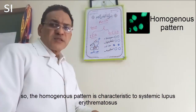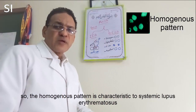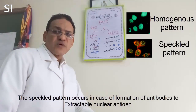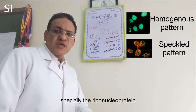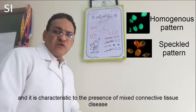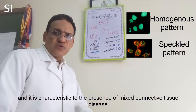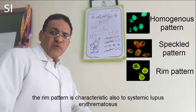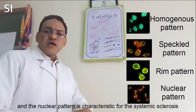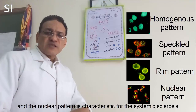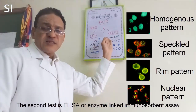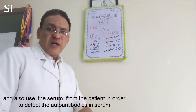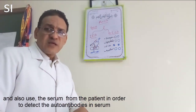The homogenous pattern is characteristic of systemic lupus erythematosus. The speckled pattern occurs in cases of antibody formation against extractable nuclear antigens, especially ribonucleoprotein, and is characteristic for mixed connective tissue disease. The rim pattern is also characteristic for systemic lupus erythematosus, and the nuclear pattern is characteristic for systemic sclerosis. The second detection method is ELISA, or enzyme-linked immunosorbent assay, which also uses the patient's serum to detect antibodies.